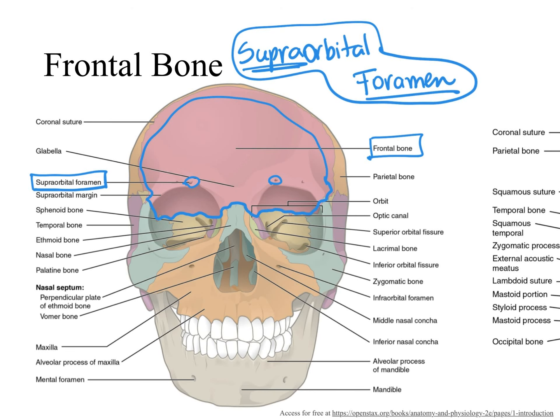I strongly suggest you start learning all bone features associated with the name of the bone. For example, you learned supraorbital foramen of the frontal bone. And then later on in the semester, when you are asked which bone has the supraorbital foramen, that will be an extremely easy question to answer. But if we start studying just the supraorbital foramen, right now you know it belongs to the frontal bone, but we are covering several bone features for several bones, so it might get a little confusing which bone has that specific bone feature when you know so many of them.